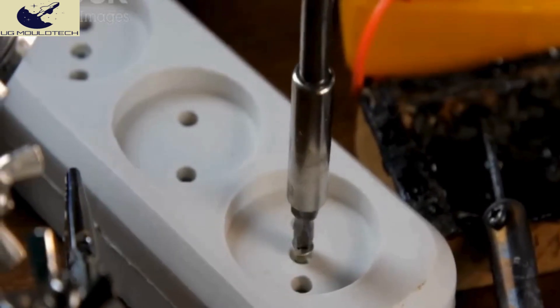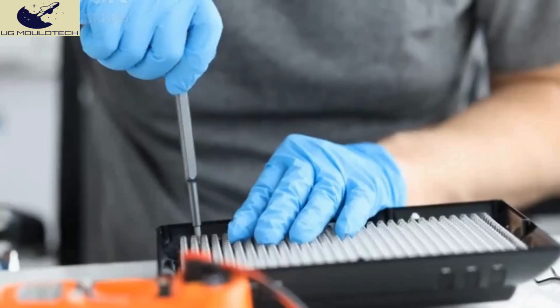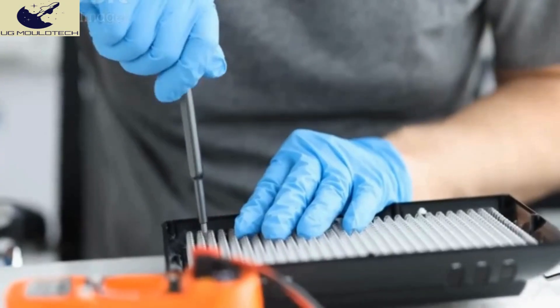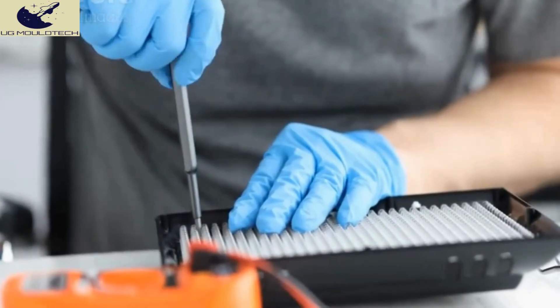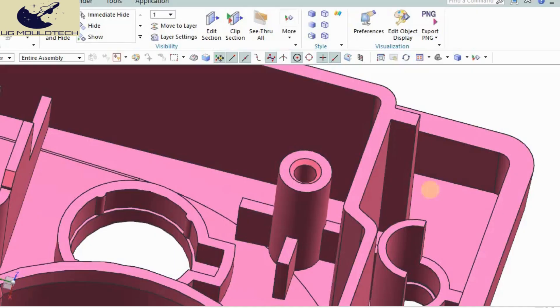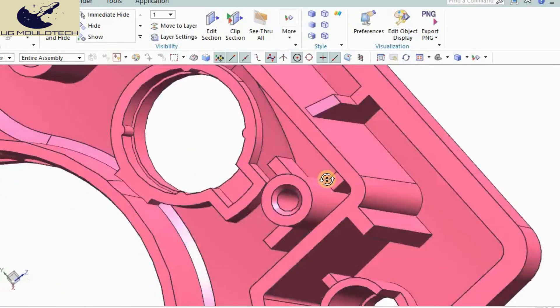When snap-fits aren't feasible, bosses—those reinforced areas designed to accommodate screws or bolts—offer a robust and reliable assembly solution. They ensure secure fastening and enhance the structural integrity of the plastic parts.